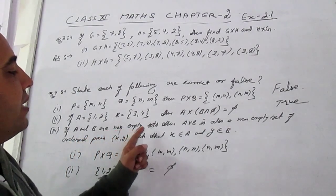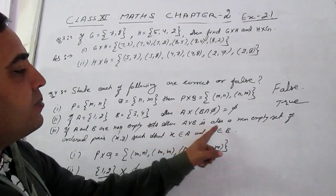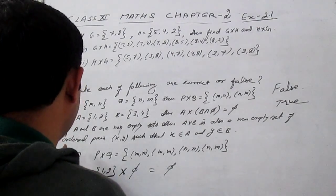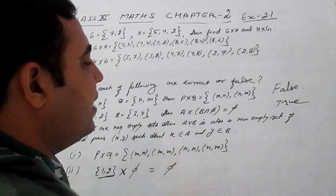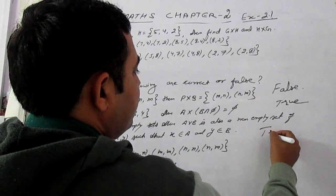Third one is, if A and B are non-empty sets, then A cross B is also a non-empty set of ordered pair (x,y) such that x belongs to A and y belongs to B. It is also true.